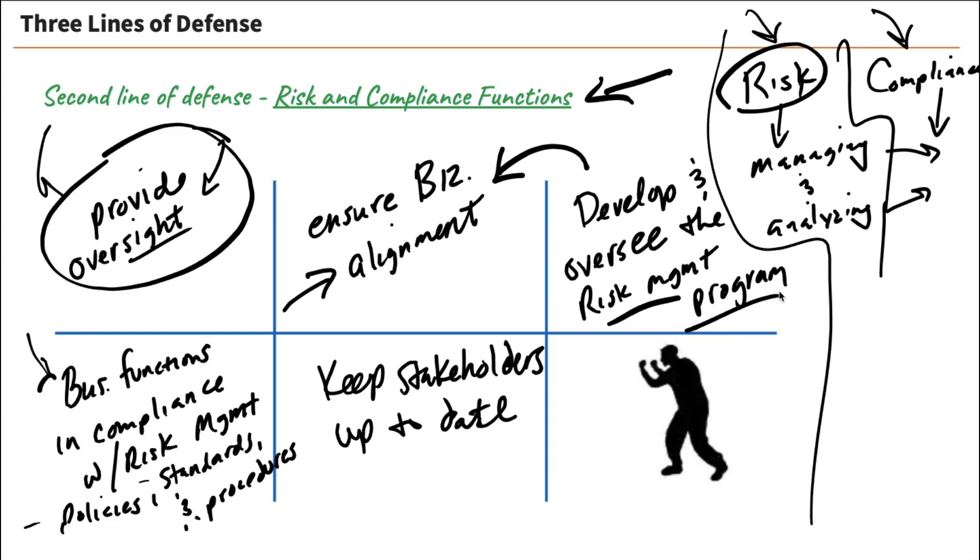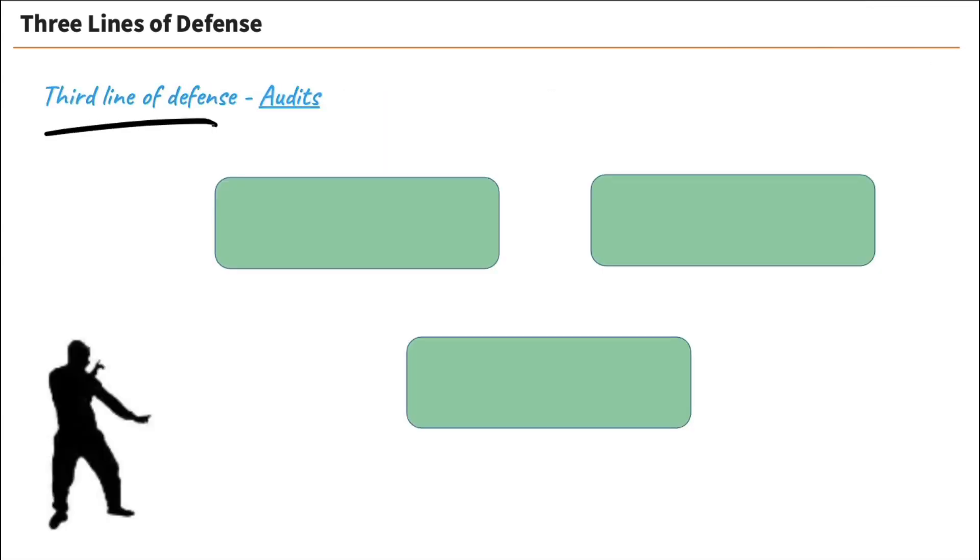Now it's time for our third line of defense. Our third line of defense is audits. That could be internal or external audits. It doesn't have to be internal only. Basically, it's audits. It's our assurance department doing their job to help us out with risk. Auditors are supposed to do three things.